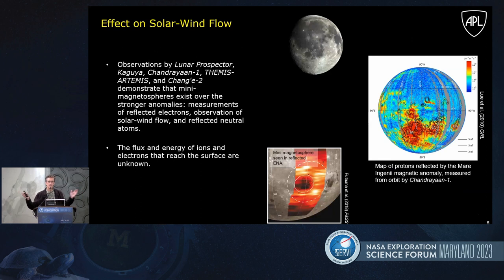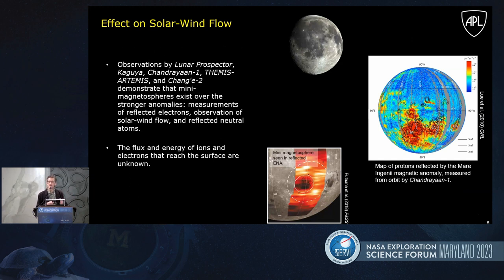Then there's the matter of the effect on the solar wind flow. These localized magnetic fields change the moon's interaction with the solar wind from what it would be if the moon was just an unmagnetized rocky sphere. A variety of observations from a variety of spacecraft have demonstrated there are actually mini magnetospheres that form over the strongest of these magnetic anomalies. And that's of interest to space plasma physicists.